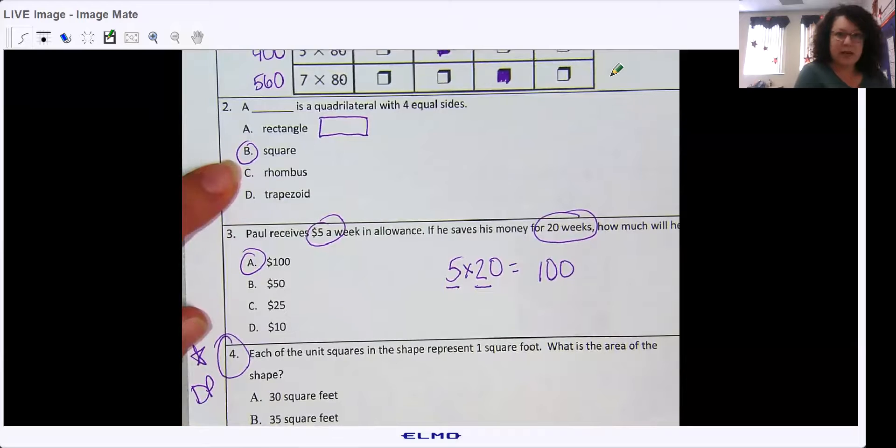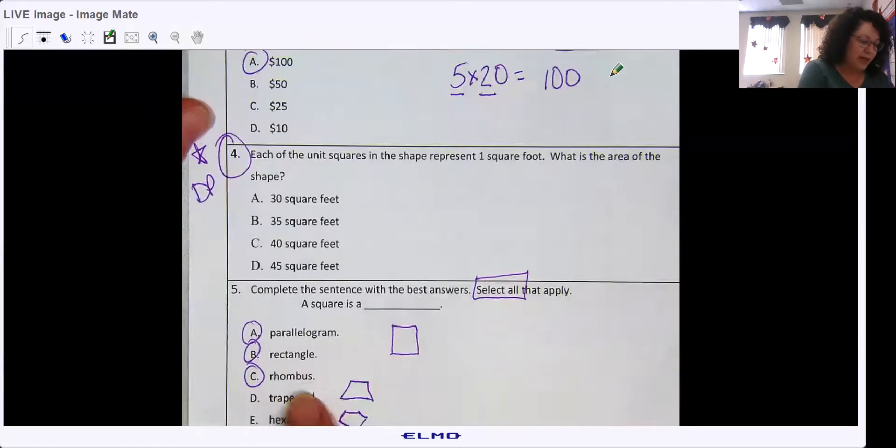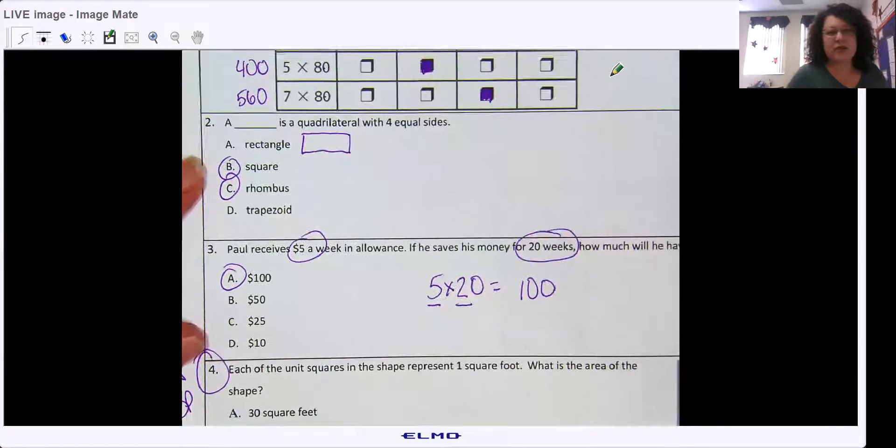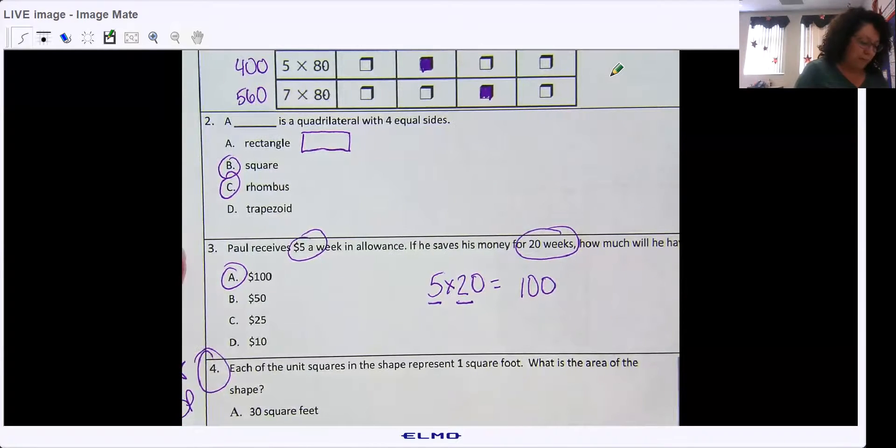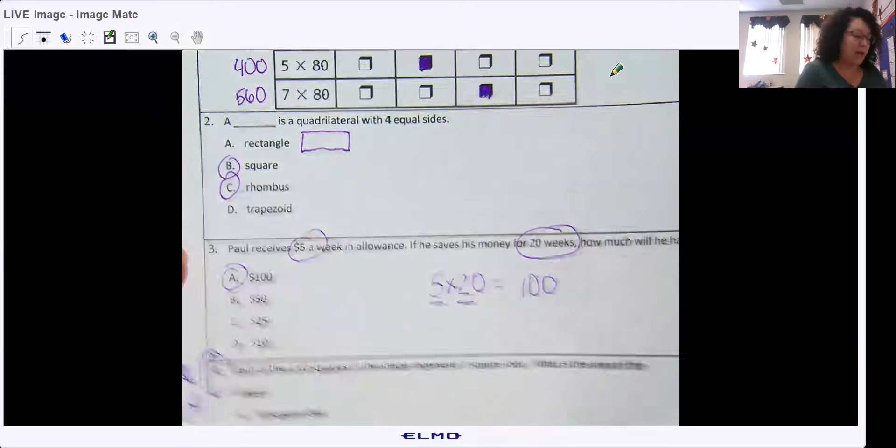All right. Number two is kind of bothering me here, because I keep thinking a rhombus is a quadrilateral with four equal sides because a square is also a rhombus. So that one is a little tricky. Now, it didn't say select all, but again, we did not write this, so sometimes there are a couple of mistakes.